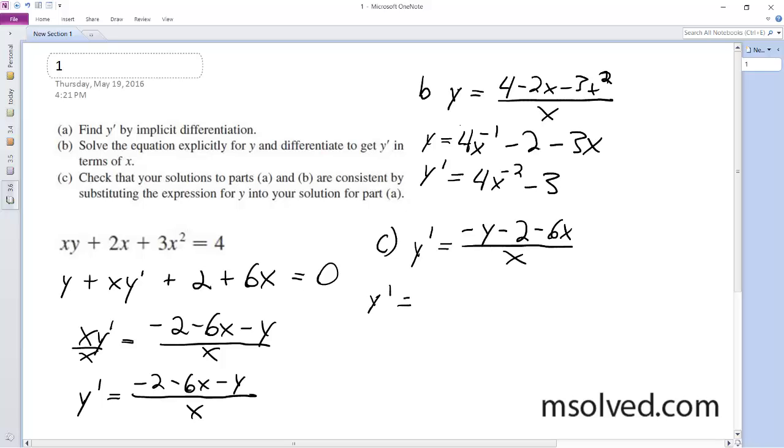So y prime is equal to negative 4x to the negative 2 minus 3 minus 2 minus 6x over x. And simplified down, this becomes 4x to the negative 2 minus 3. Okay, that's it.